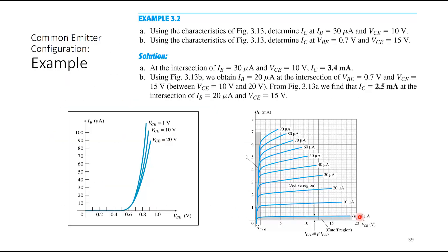Here is a simple example showing how to read the graphs. Using the characteristics of figure 3.13, we need to determine IC if IB is 30 microamps and VCE is 10 volts. Since IB is already known to be 30 microamps and VCE is 10 volts, we read directly from the output characteristics — the Y-axis value of IC is 3.4 milliamps.